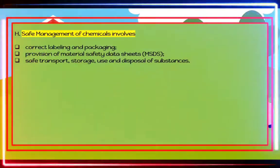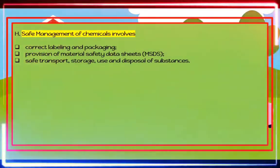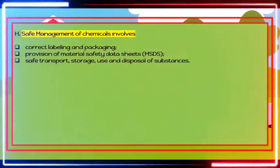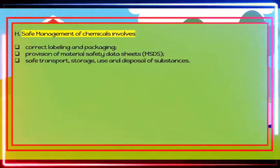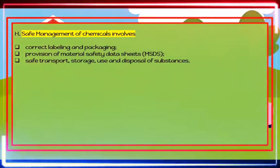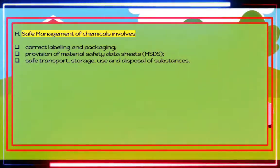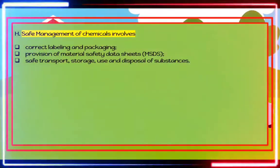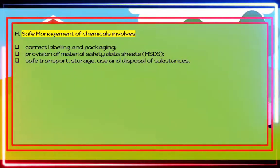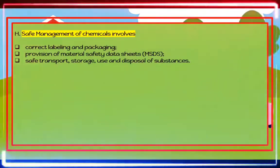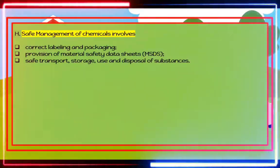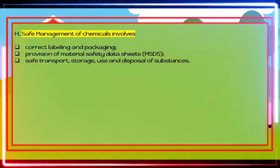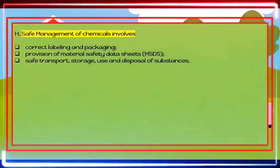Safe management of chemicals involves: First, correct labeling and packaging. Second, provision of material safety data sheets (MSDS). Third, safe transport, storage, use, and disposal of substances.